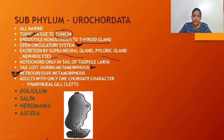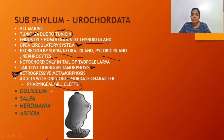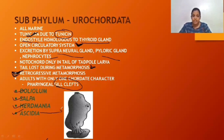This picture shown here is of Ascidia — an important picture for the exam. This is all about the first subphylum, Urochordata.